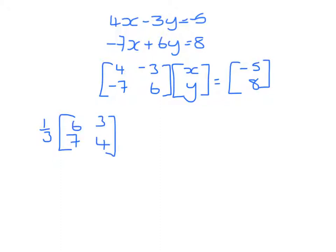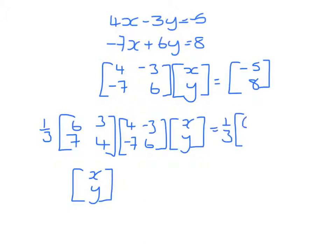Multiplying by the inverse creates 1 on the left hand side, which means we're left with the matrix x, y. You've got to be careful on the right. Order of matrix multiplication is really important, so we have to put this matrix first.